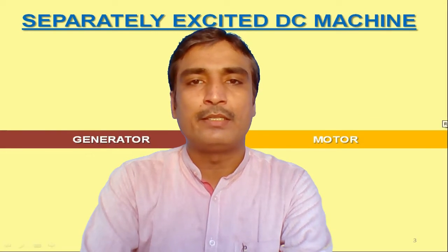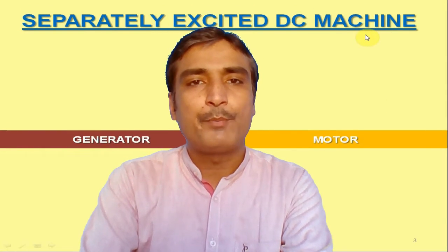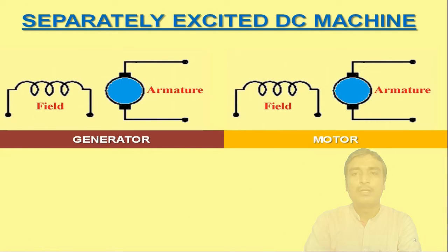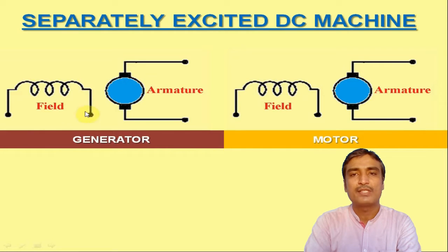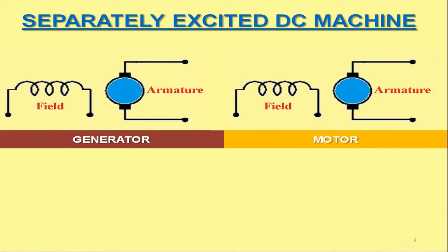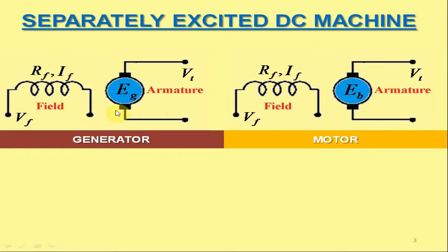The first machine type is the separately excited DC machine. These are the representations of separately excited DC machines — the first dealt as a DC generator and the second as a DC motor. The field windings are supplied by an independent external source of voltage VF. The field winding resistance is RF and the current is IF. EG and EB are the generated EMF and back EMF in the armatures of the separately excited DC generator and motor respectively.